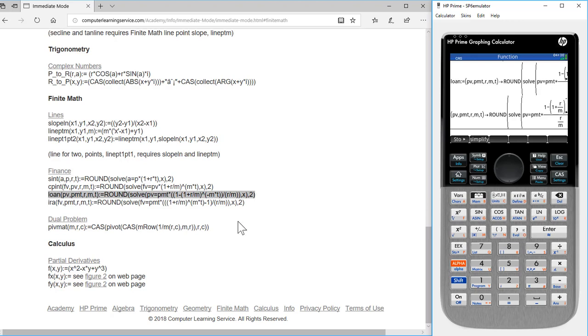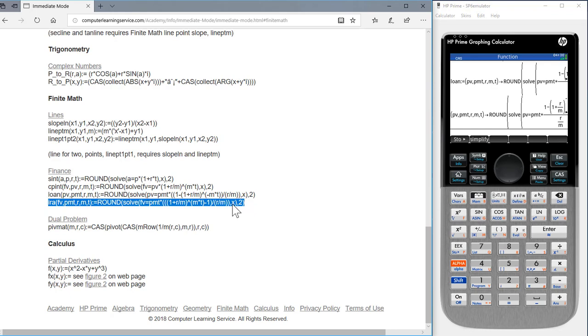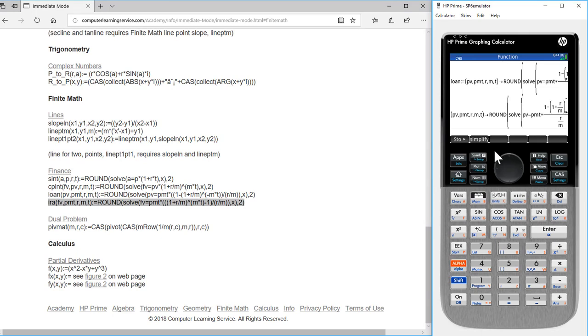Do the same process for IRA. Double click IRA, shift click, right click to copy. Move over to our calculator, control V, press enter.